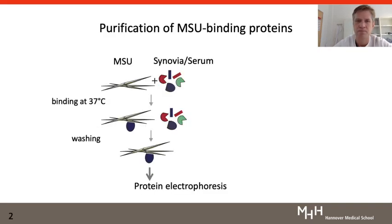To identify possible other crystal recognition molecules we just purified MSU binding proteins from human body fluids. This way we would identify soluble recognition molecules and not transmembrane proteins. We principally just incubated MSU crystals with synovial fluid or serum, let the proteins bind, washed away the unbound proteins and eluted the bound proteins for protein electrophoresis.